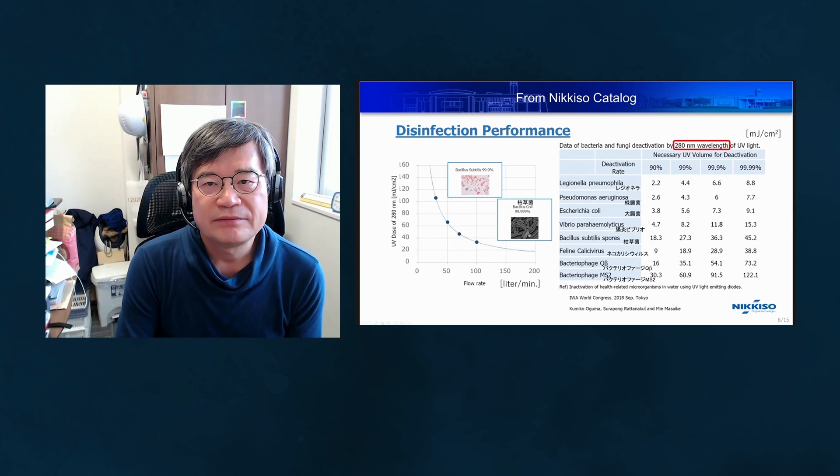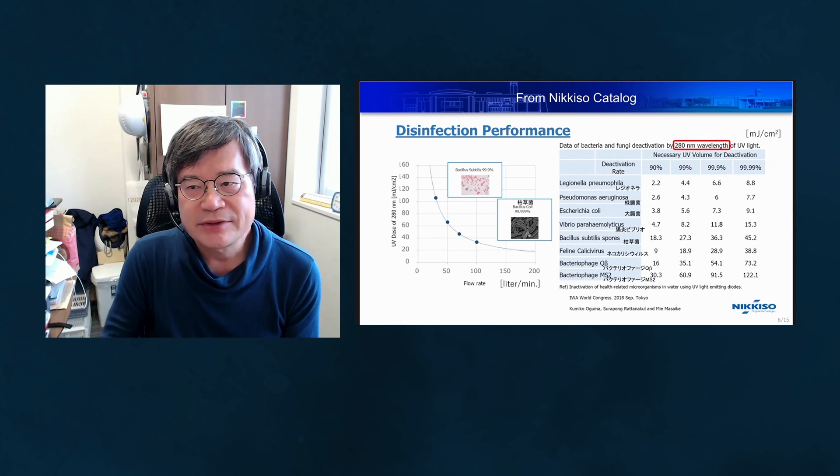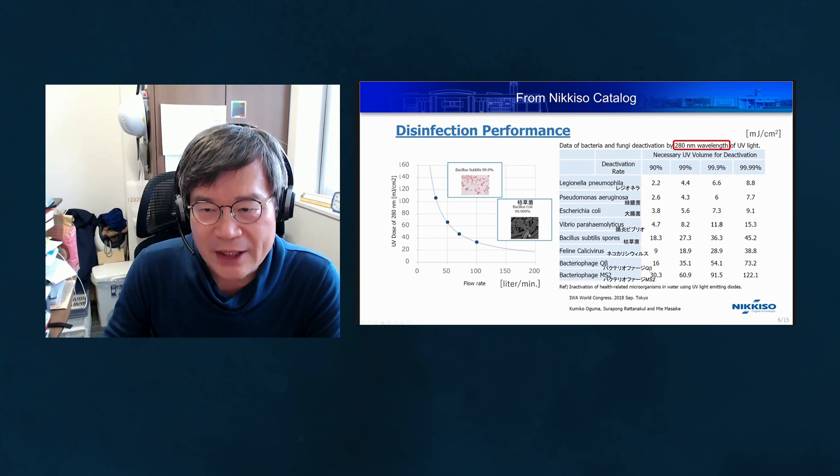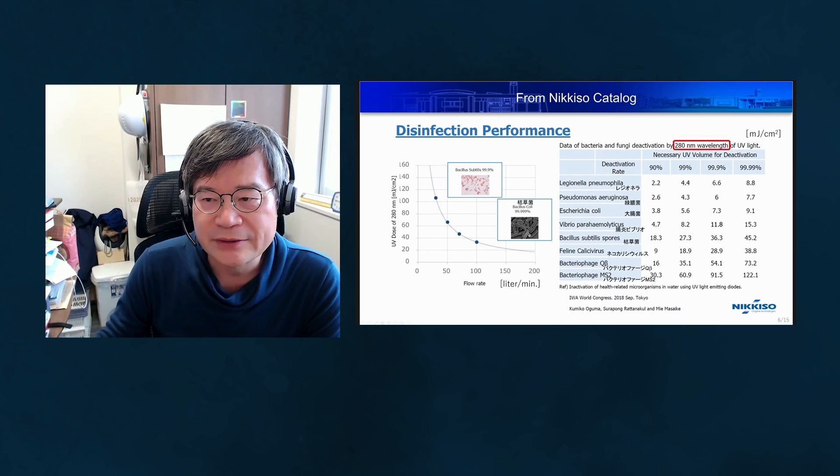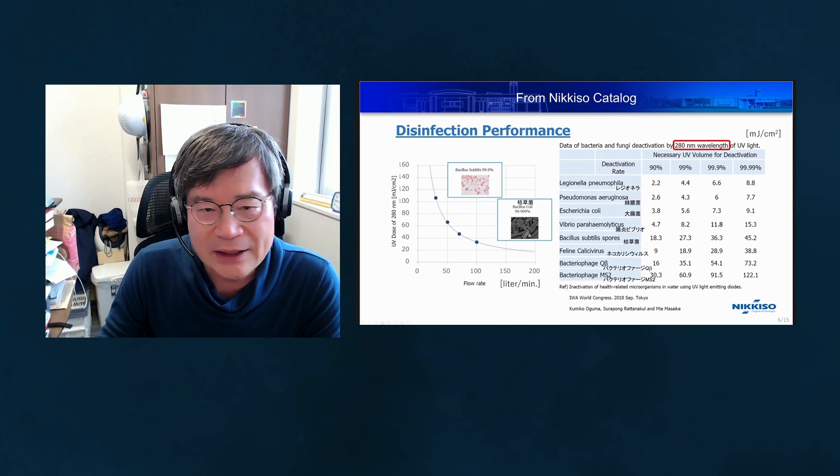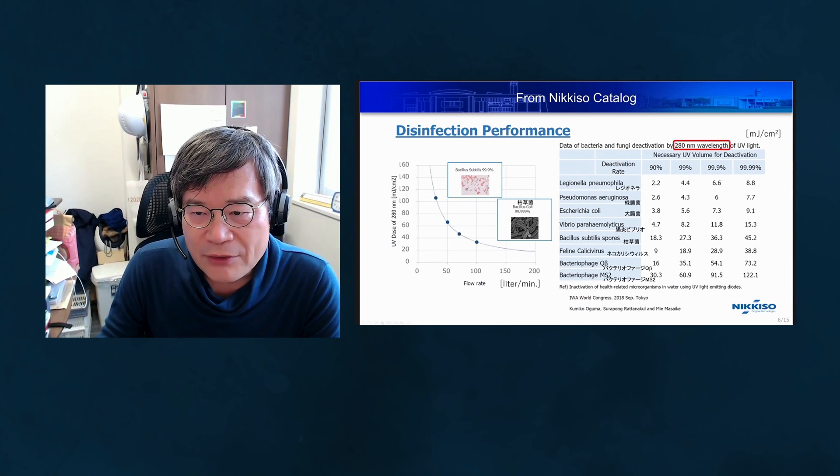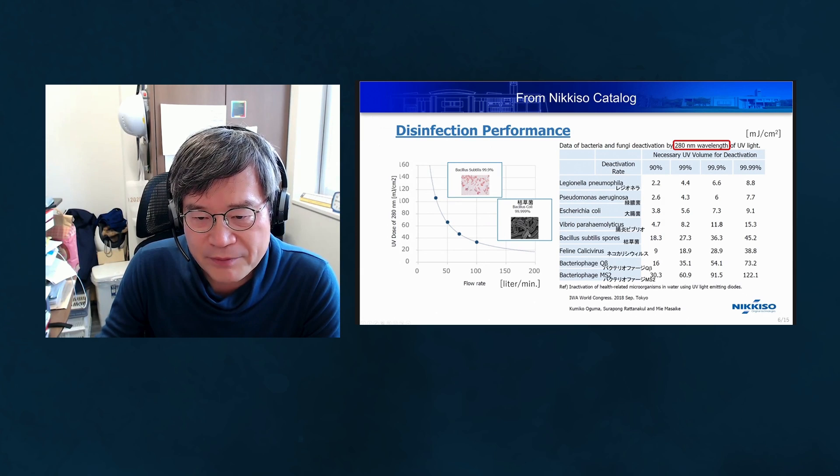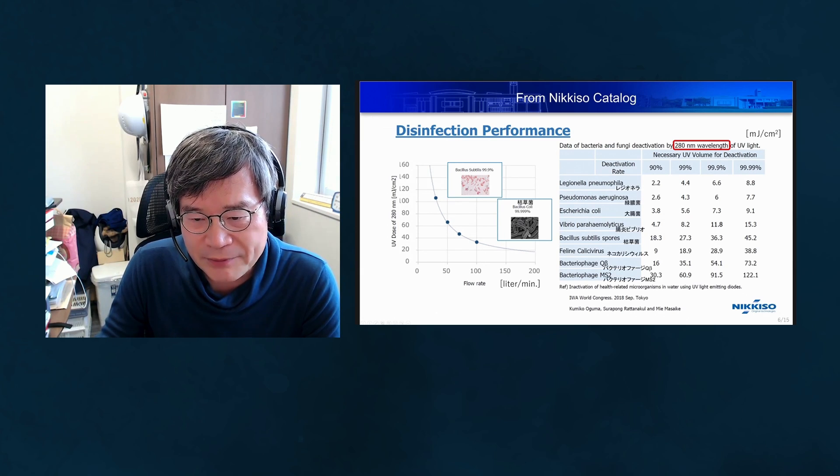This is from Nikkiso's catalogs. By using 280 nanometer deep UV light, we can inactivate Legionella, Pseudomonas, E. coli, Vibrio, Bacillus, and bacteriophages. These small chips can be used for many unexpected applications.